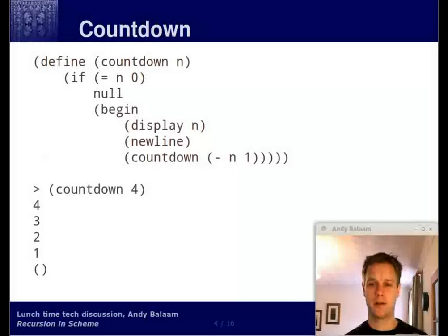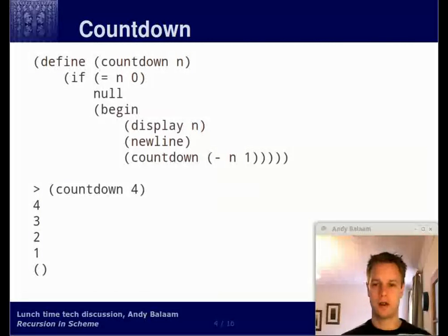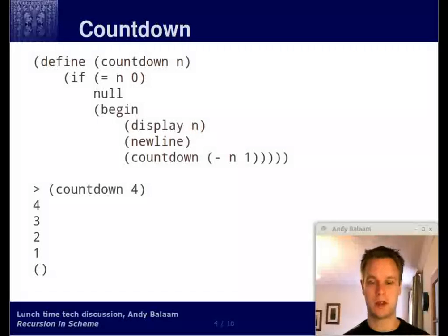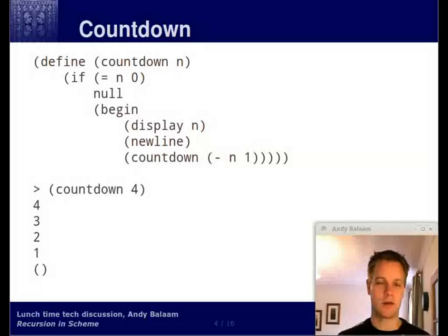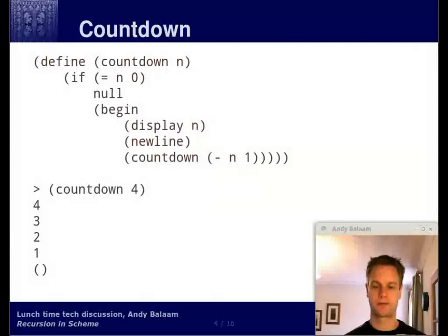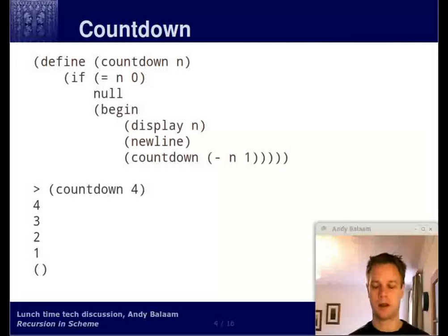Let's look at another function. This is a really silly function — it's going to be useful for us to talk about the different types of recursion. This is a function called countdown, and you can see at the bottom what it does. If you run the countdown function with an argument of 4, it prints out 4, 3, 2, 1, and then its return value is the empty list, which is the same as null. We care about it printing out 4, 3, 2, 1. We're going to do this quite a different way to help us understand the normal way of doing things in Scheme.